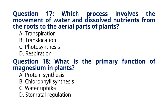Question 18. What is the primary function of magnesium in plants? A. Protein synthesis. B. Chlorophyll synthesis. C. Water uptake. D. Stomatal regulation. The correct answer to question 18 is option B. Chlorophyll synthesis.